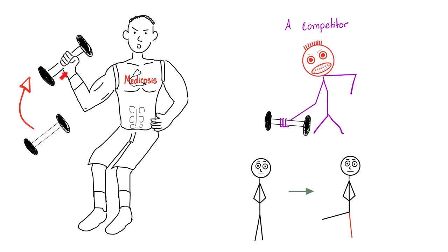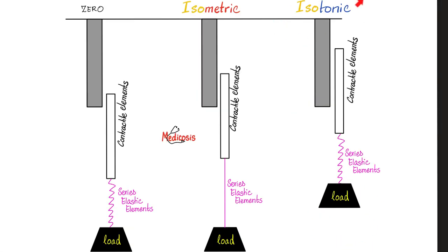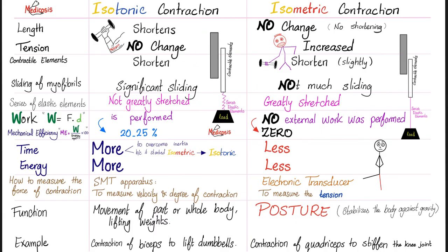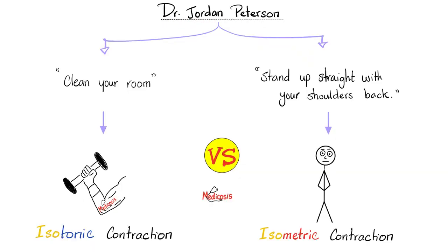Isotonic contraction is when you actually lift the dumbbell. Isometric contraction is when you cannot lift the dumbbell, or when standing on one leg. As Dr. Jordan Peterson said, 'clean your room' — that's isotonic contraction. When he said 'stand up straight with your shoulders back, you bloody lobster' — that was isometric contraction.